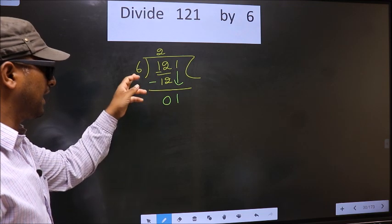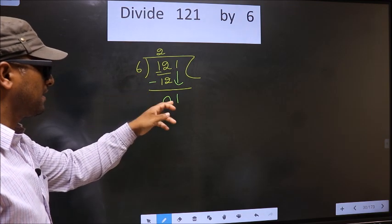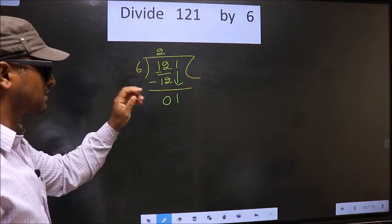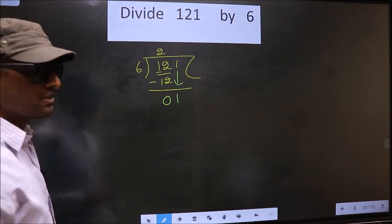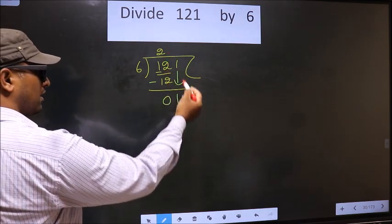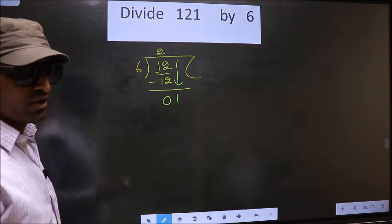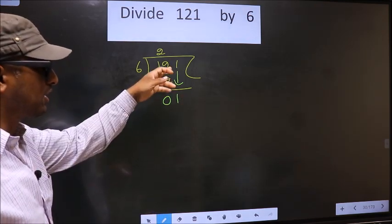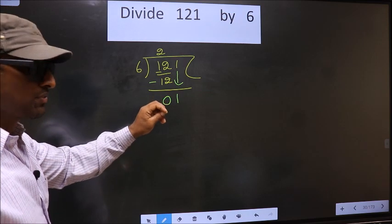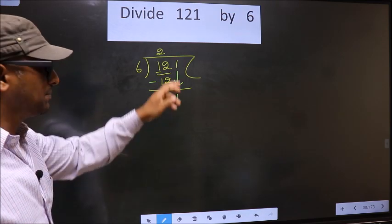we have 1 and here 6. 1 is smaller than 6, so what many do is they put a dot and take 0 here, which is wrong. Just now you brought the number down, and in the same step you want to put a dot and take 0, which is wrong.